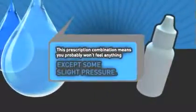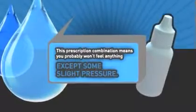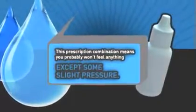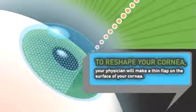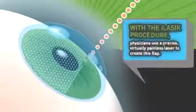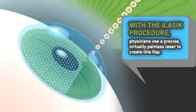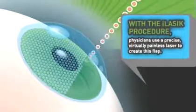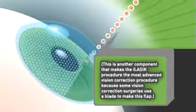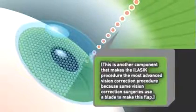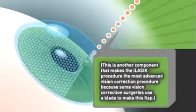This prescription combination means you probably won't feel anything except some slight pressure. To reshape your cornea, your physician will make a thin flap on the surface of your cornea. With the iLASIK procedure, physicians use a precise and virtually painless laser to create this flap. This is another component that makes the iLASIK procedure the most advanced vision correction because some vision correction procedures use a blade to make this flap.